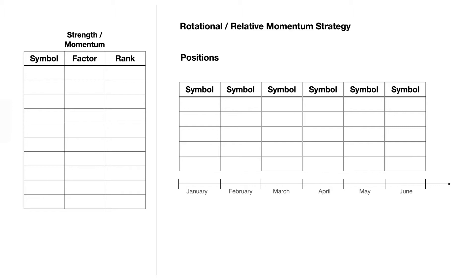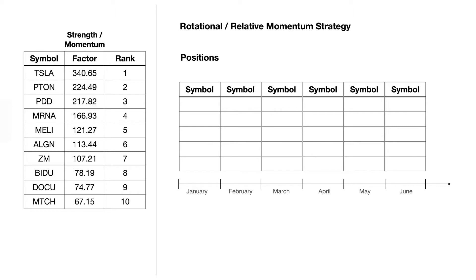What happens is we take the whole of our market — in this case the NASDAQ 100 — and we have some kind of factor that we calculate which gives an idea of how quickly a stock has been going up historically. We might call that the momentum or the strength factor. We then rank all the stocks based on the highest first of those momentum factors. So at the end of December, Tesla (TSLA) was the highest momentum factor, then PDD, and so on, all the way down to the bottom 100.